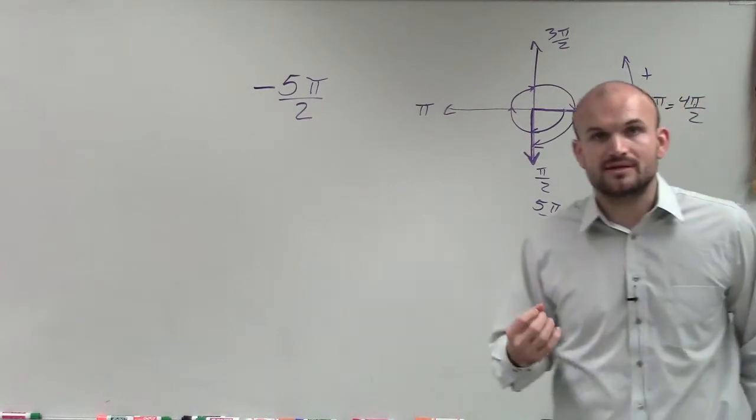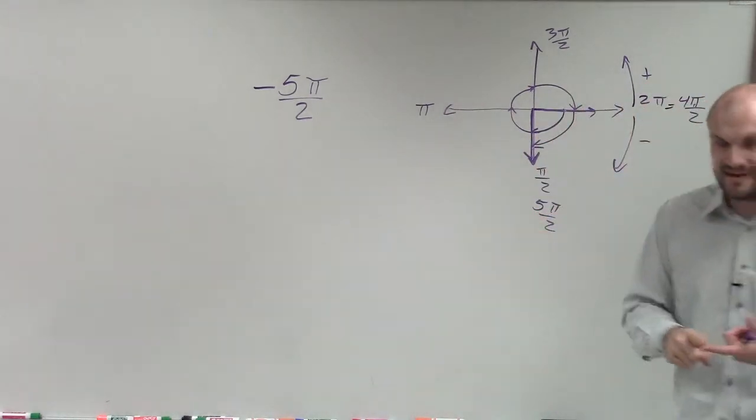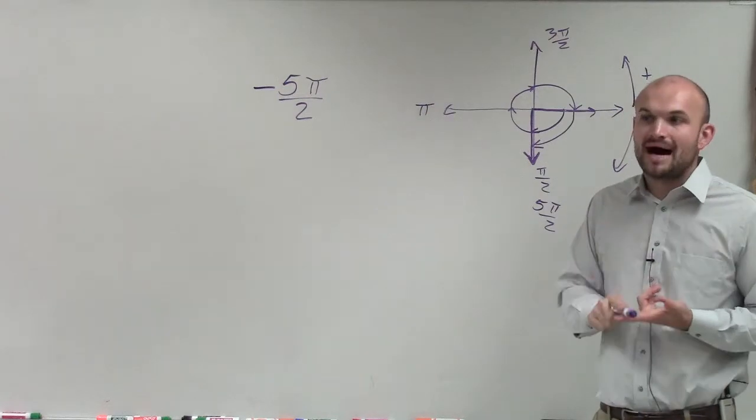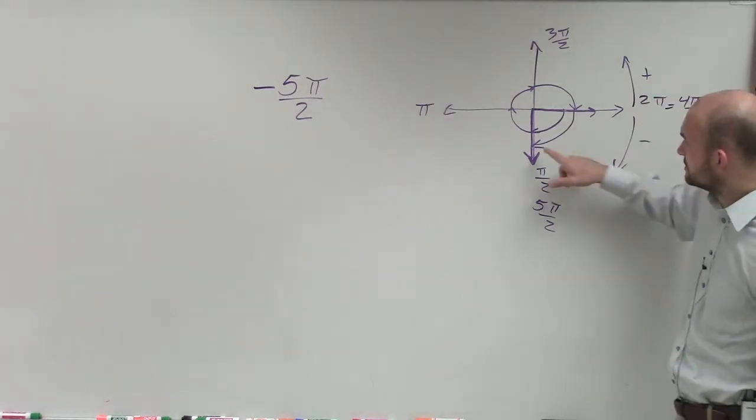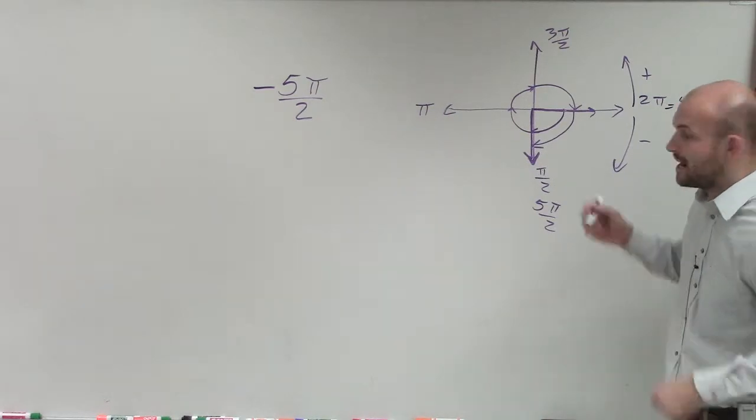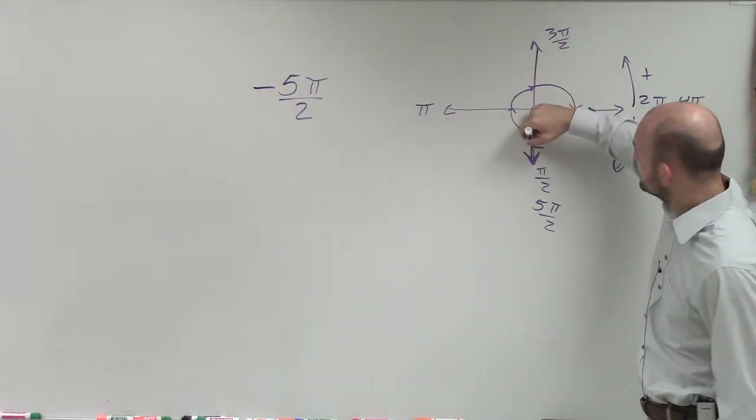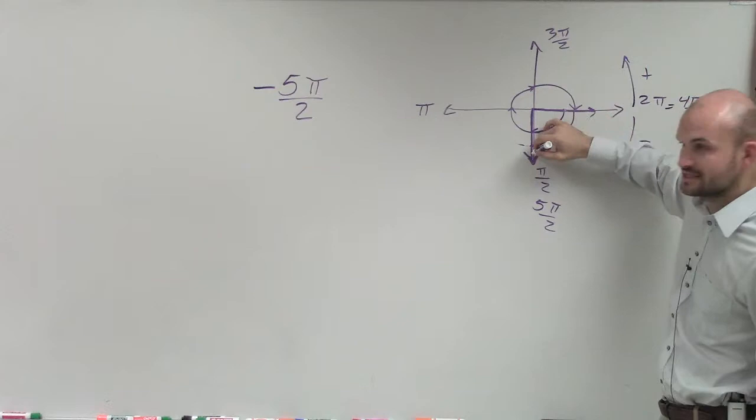However, where this gets a little bit tricky is, I'm asking you to find the smallest positive and negative coterminal angle. So if I subtract another 2π, I'm going to come around again one more time, and it's going to be right there.